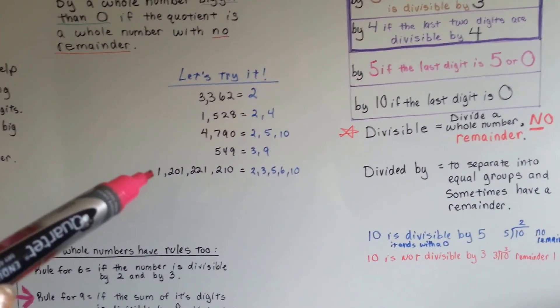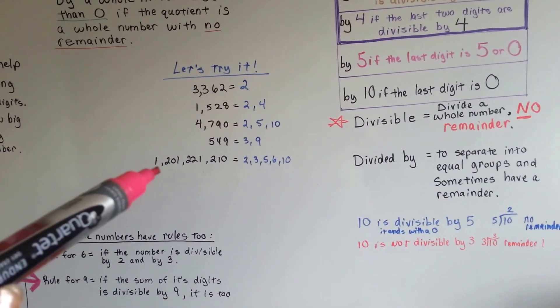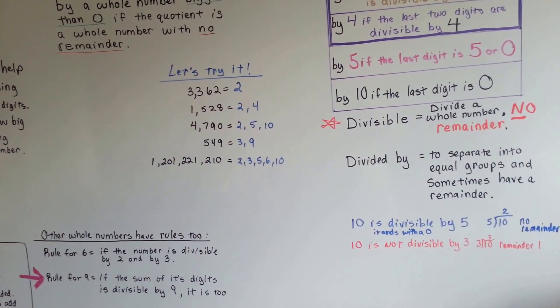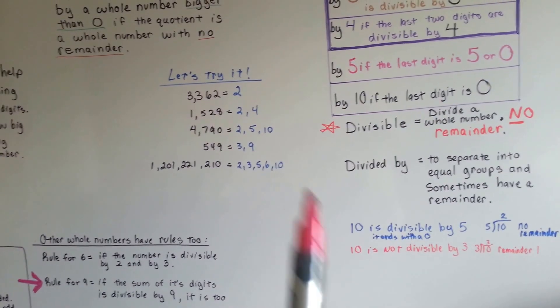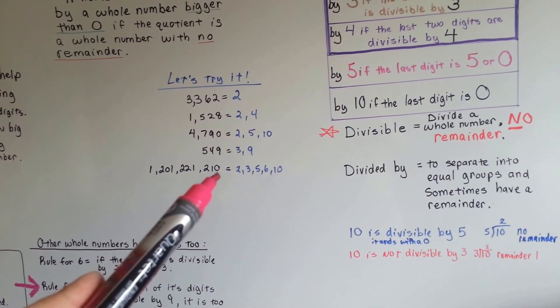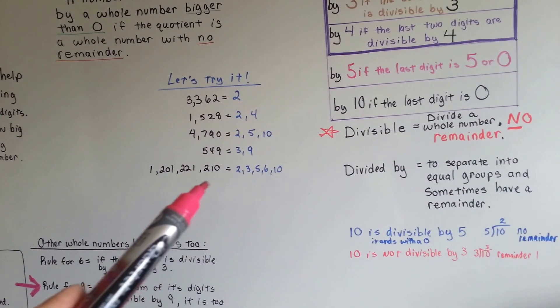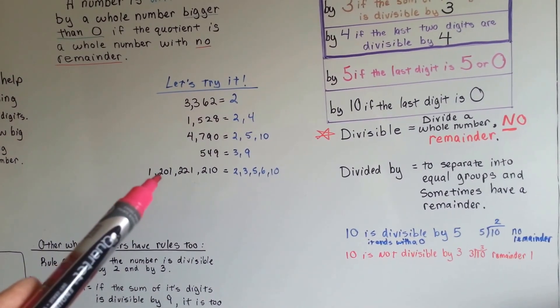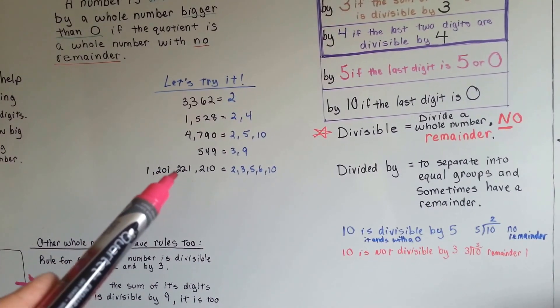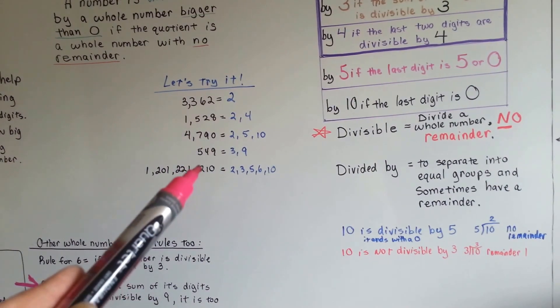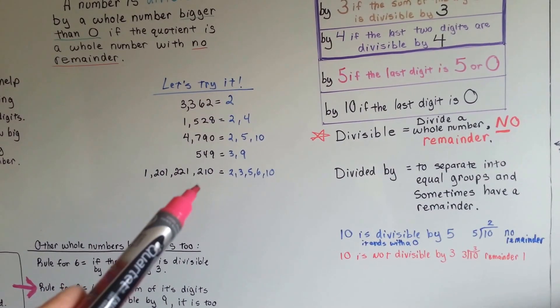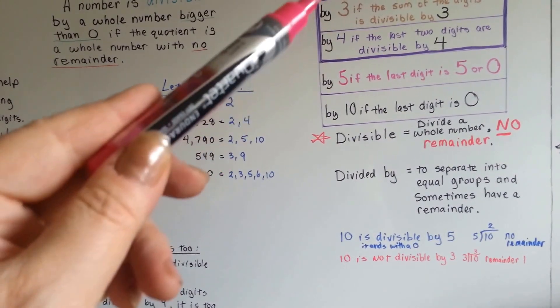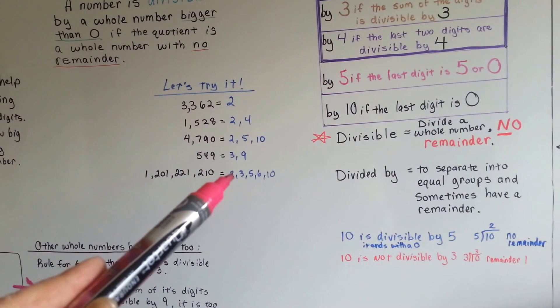Now let's look at this number, 1,201,221,210. It's divisible by 2, 3, 5, 6, and 10. It's got a 0 at the end, so it's even, so 2 works. When we add it all up, 1 and 2 is 3, and 1 more is 4, 5, 6, 7, 8, 9, 10, 11, 12. We ignore the 0's, of course. 12 is divisible by 3, so 3 works, so now we've got 2 and 3.